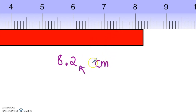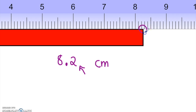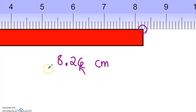We could write 8.2 centimeters, but with significant figures you actually have to include a third digit. That third digit is going to be an uncertain, estimated digit. It allows a reader of your work — a teacher grading your lab work, for example — to know how precise your instrument is. I would guess the rectangle is 6 tenths of the way to the next tick mark, so our measurement reads 8.26 centimeters.